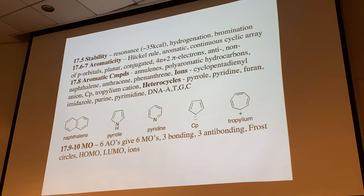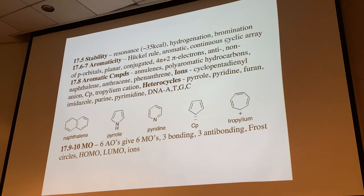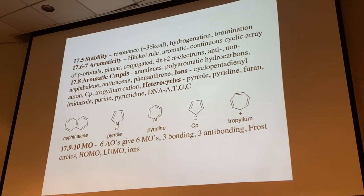To get started with aromaticity: it's not just about smell or odor, though historically it comes from benzoin gums, frankincense, myrrh, and other fragrant things rich in benzaldehyde and benzoic acid. Aromaticity is now carefully defined from physical characteristics of stability, reactivity, and NMR spectroscopy. The Hückel rule states: to be aromatic, a compound needs a continuous cyclic array of conjugated p-atomic orbitals, must be planar, and the number of pi electrons must follow the 4n+2 rule, where n is any integer (0, 1, 2...).